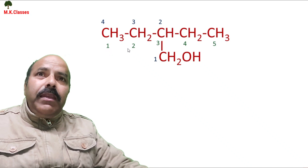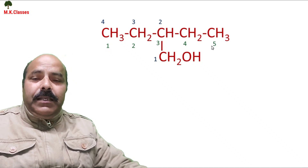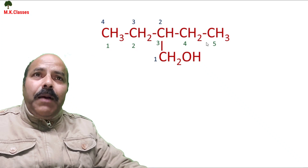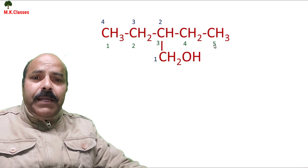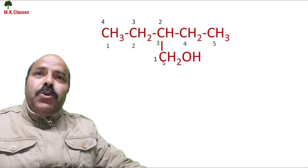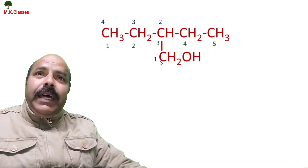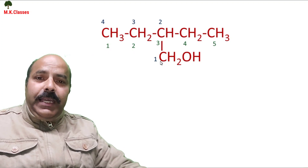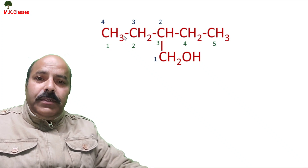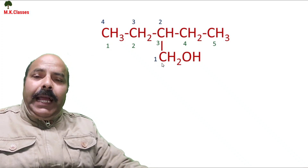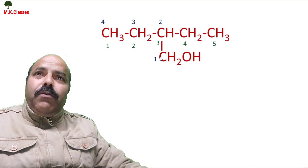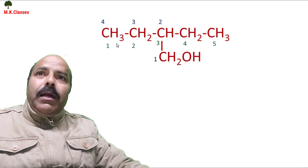The green numbers represent the longest chain, having five carbon atoms, but which is actually four carbon atoms. We need to choose one, two, three, four. The actual parent chain is having only four carbon atoms.